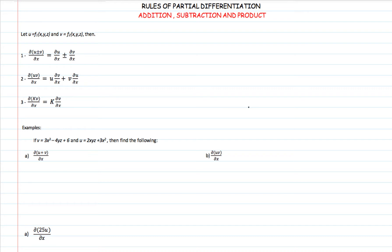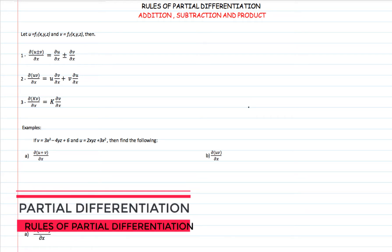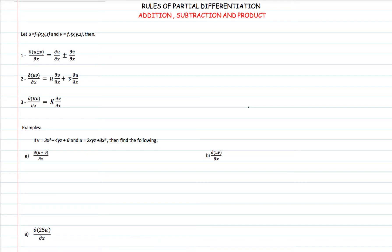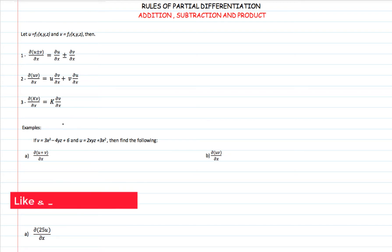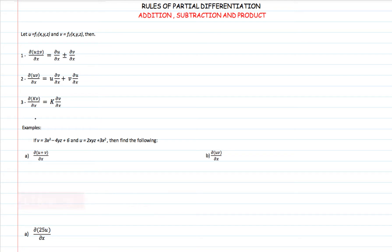This function can have x, y, z, and w, and as many variables as we want. The overall point is that we just want to find the rate of change of that function with respect to only one of those variables. We will see addition, subtraction, multiplication which is the product, and a bonus which is the derivative of a function multiplied by a constant. The rule is: if you have a constant multiplying some function, then the result is just the constant multiplied by the derivative of that function.